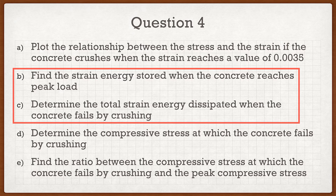Part B corresponds to strain = 0.002, while Part C corresponds to strain = 0.0035. One thing that might throw students off is the wording: Part B says 'strain energy stored' while Part C says 'strain energy dissipated.' At peak load, the concrete hasn't broken yet, so the strain energy is stored. When we talk about dissipated, it means released — when concrete crushes and breaks apart, all that stored energy is released. Even though the wording differs, we're doing the exact same procedure for both parts.